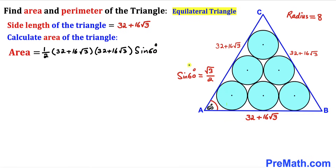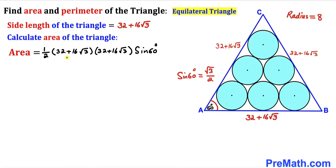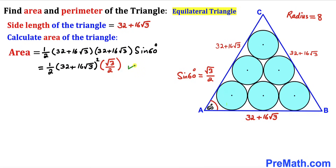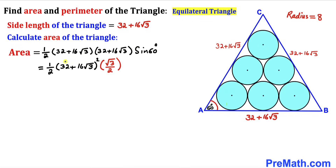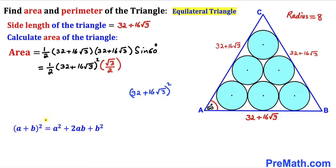We know that sin(60°) = √3/2, so we replace that term. The two identical factors become (32 + 16√3)². We then apply the algebraic identity: (a + b)² = a² + 2ab + b², which we will use to expand (32 + 16√3)².